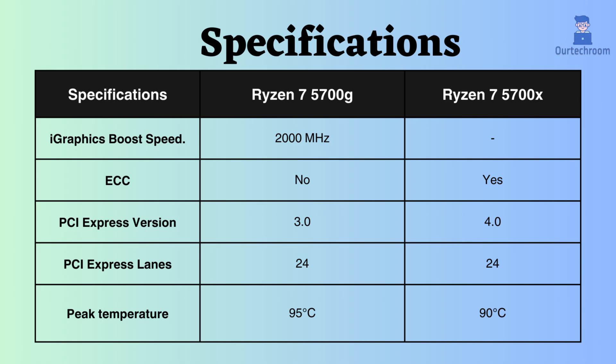The Ryzen 7 5700X supports PCIe version 4, whereas the Ryzen 7 5700G only supports PCIe version 3. Both processors support 24 PCIe lanes. Having a higher number of PCIe lanes enables the handling of massive data transfers with low latency, benefiting network cards and high-end graphics cards.